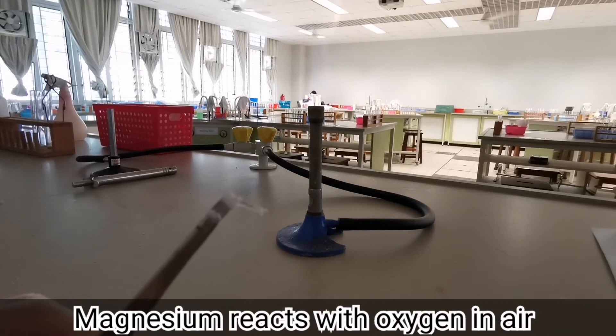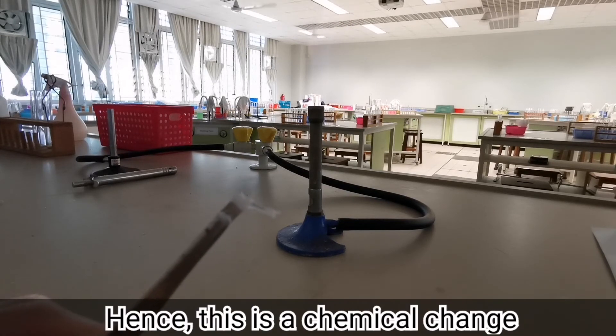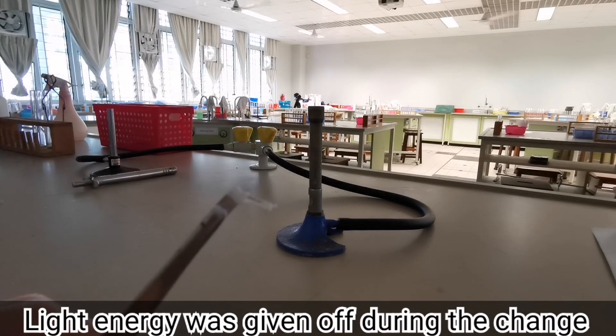So magnesium actually reacts with oxygen in the air to form magnesium oxide, a white solid. Hence, this is a chemical change as a new substance has been formed after the reaction and it gave off light energy in the process.